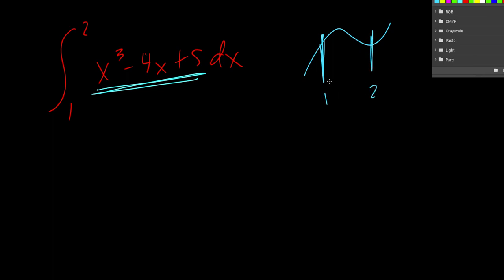And then we'd look between 1 and 2, and we'd find the area under that curve. So to do that, we take the anti-derivative. So we raise the exponent by 1, divide by the new exponent.